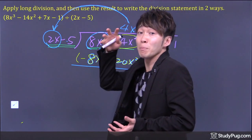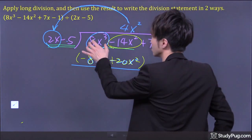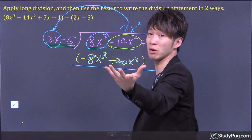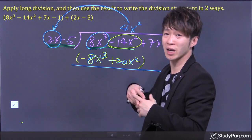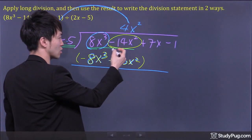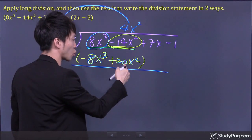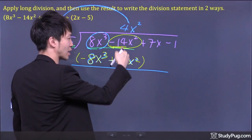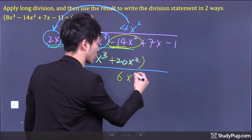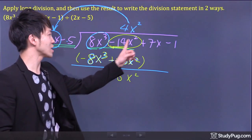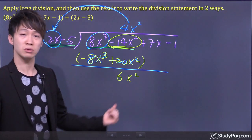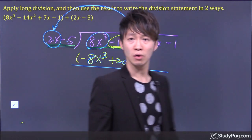So by bringing the negative sign in, we no longer have to worry about subtraction. We can just combine terms. Combining the x³ terms: 8 and negative 8 cancels out. Negative 14 add 20 equals 6, so we get 6x².